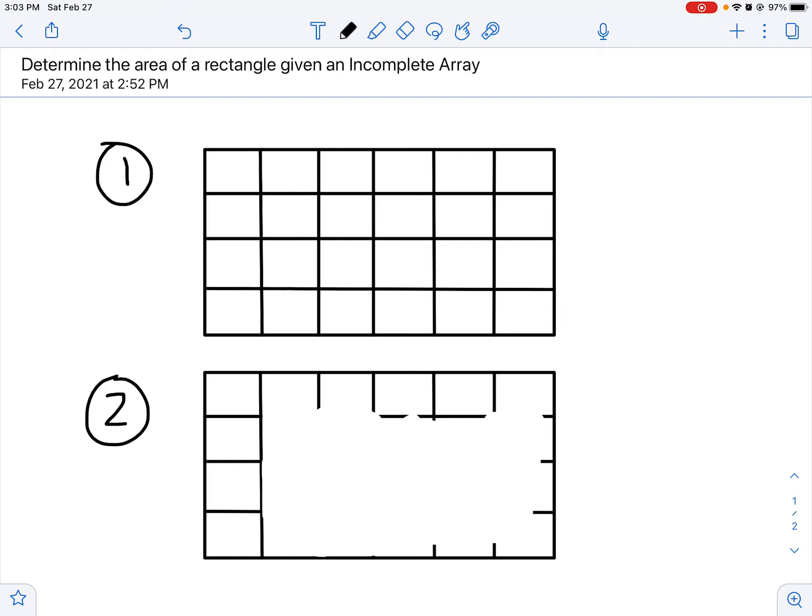You may already have a sense of how this will work because we previewed this last week. Let's take a look at our first rectangle. Just a reminder, when we're looking for the area of a rectangle, all we need to do is multiply the number of the length of the side by the length of the other side—length times width. We're going to multiply the number of rows times the number of columns, or times the number of items in each row.